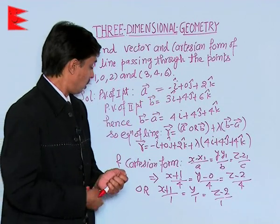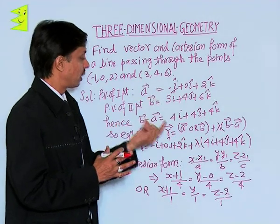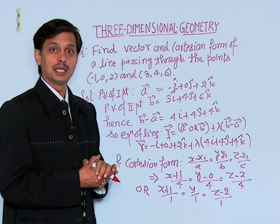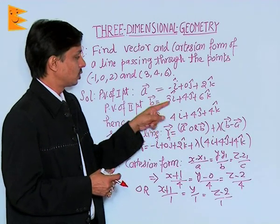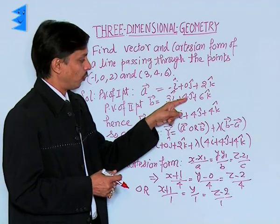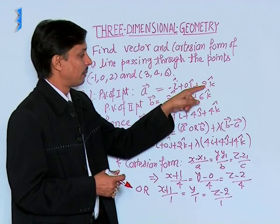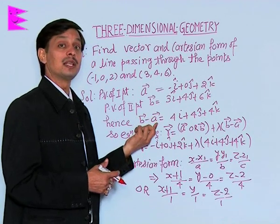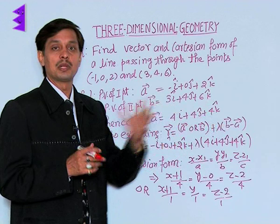Now, to get the direction vector, it is B minus A. B minus A gives us: 3i minus (-i) = 4i; 4j minus 0j = 4j; 6k minus 2k = 4k. So the direction vector B minus A comes out to be 4i plus 4j plus 4k.